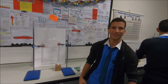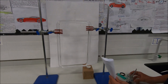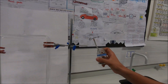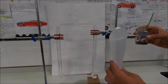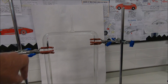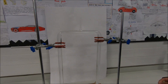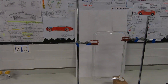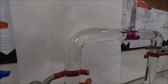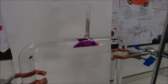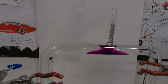Convection currents occur in fluids. We'll see how it works now by putting some potassium permanganate in this rectangular tube filled with water. Make sure it's level. Now light the candle to gradually heat the liquid. We can see the dye moving as the convection current begins.